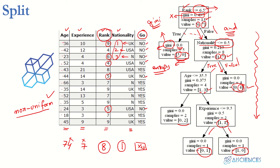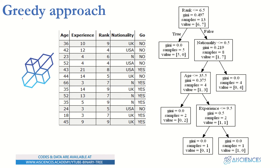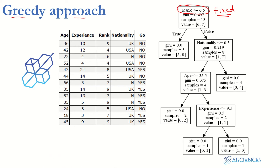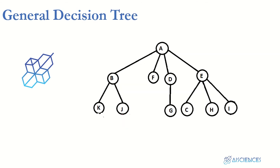One important thing to notice: this approach is greedy. Once you have decided on a feature at the top — say 'rank' is the most important — that decision is fixed and never revisited. You do not backtrack to try different combinations. This makes the algorithm much more efficient, and it is indeed called a greedy algorithm, though it may be suboptimal compared to exhaustive search.